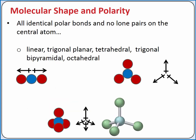There are specific cases when identical polar bonds can cancel each other out. If a molecule has all identical polar bonds and there are no lone pairs of electrons on the central atom, then those polar bonds will cancel each other out, and the molecule overall will be nonpolar. This rule only applies, however, when all of the polar bonds are identical.